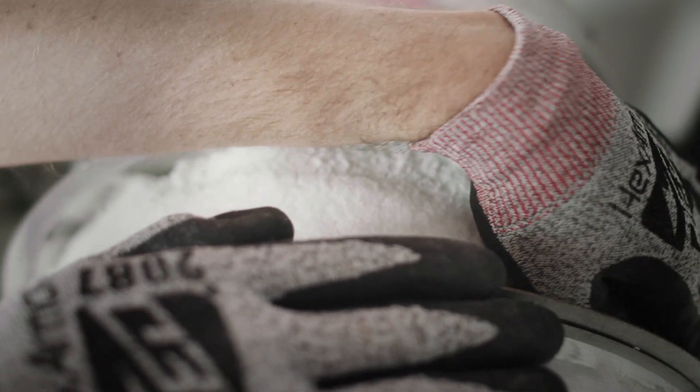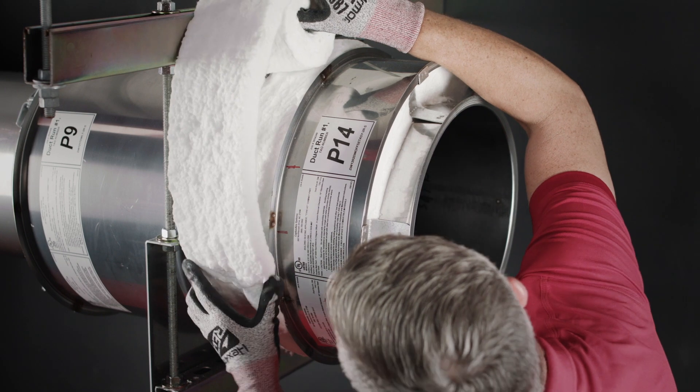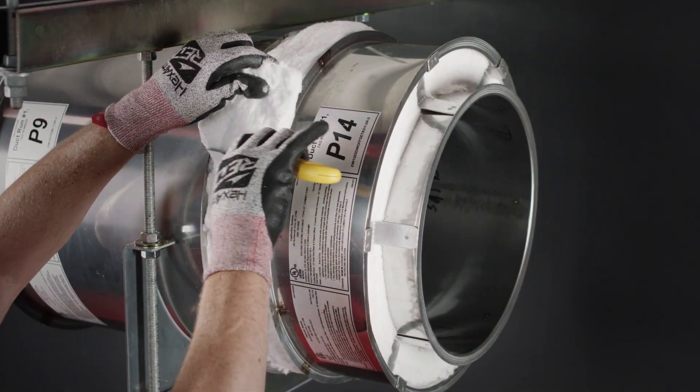Tightly wrap the insulation to completely fill all voids between the inner duct and outer shell. Be sure the remaining ends overlap by 3 inches.